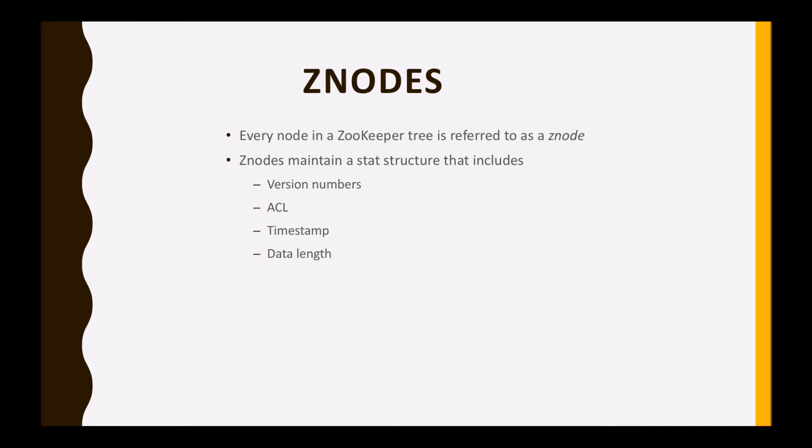The next one is ACL. It is basically an authentication mechanism for accessing the Z node. It represents read and write permissions on the Z node — others can't read this data.